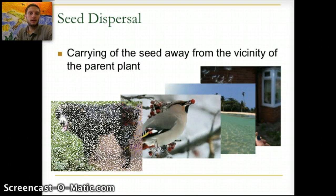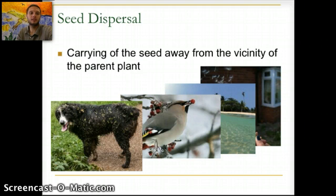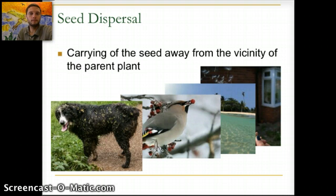Examples include wind spreading seeds, water dispersal, and animals transferring seeds by eating berries. One interesting example is a dog running through brush and getting stickers all over itself — those hooked structures on the stickers are seed adaptations to help spread seeds by attaching to passing animals or humans.